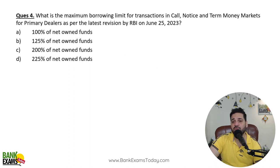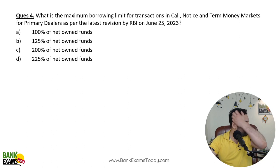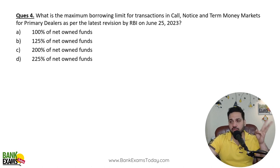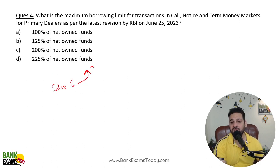What is the maximum borrowing limit for transactions in call, notice, and term money markets for primary dealers? Primary dealers who borrow money in call, notice, and term money markets — there is a certain limit. It used to be 200%, but now it has been raised to 225% of net owned funds.